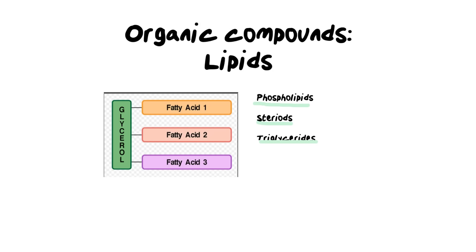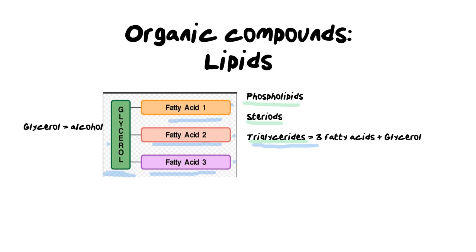The triglyceride structure has two types of building blocks: a glycerol molecule, which forms the backbone and is an alcohol-based substance, and three fatty acids that branch off in three arms — a long chain of carbon and hydrogen atoms with an organic acid group at the very end. That is why they are called triglycerides: three fatty acids to one glycerol. Each time a triglyceride is formed by joining the three fatty acids to a single glycerol, water is produced — a process called condensation synthesis.